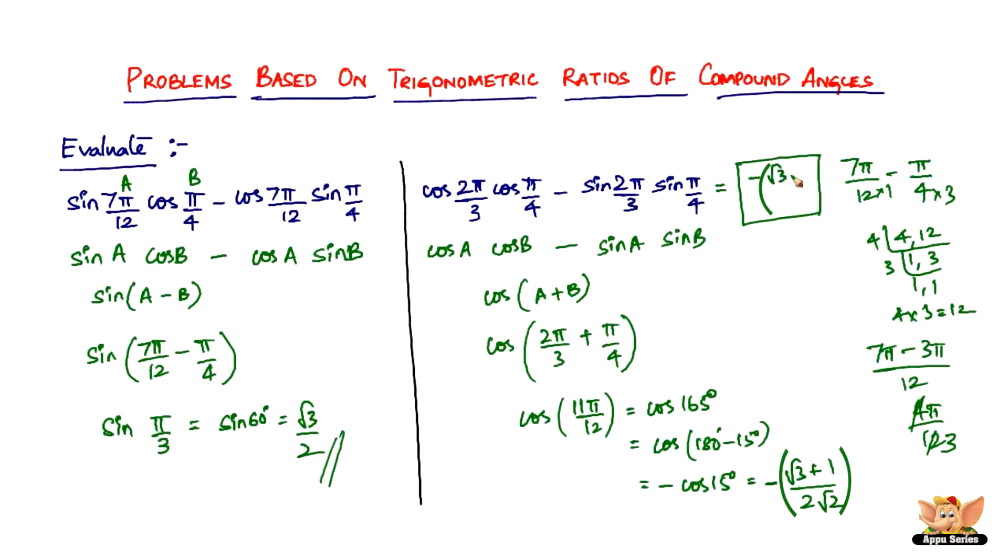So this is equal to minus root 3 plus 1 divided by 2 root 2. So that ends these problems as well as this video. I'll see you in the forthcoming videos with more problems based on trigonometric ratios of compound angles.